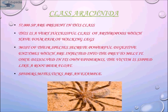Class Arachnida is the second class of Phylum Arthropoda. About 57,000 species are known to date. This very successful class has four pairs of walking legs, totaling eight legs. Most species secrete powerful digestive enzymes injected into prey to liquefy it. Once dissolved, the victim is sipped like a root beer float. Spiders, mites, and ticks are examples of Class Arachnida.